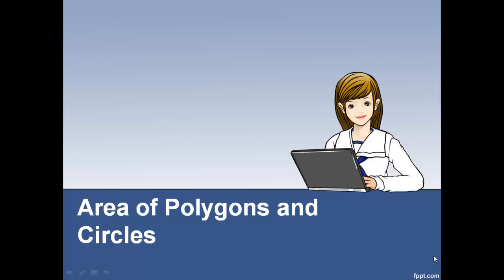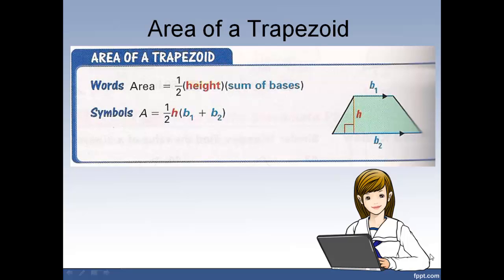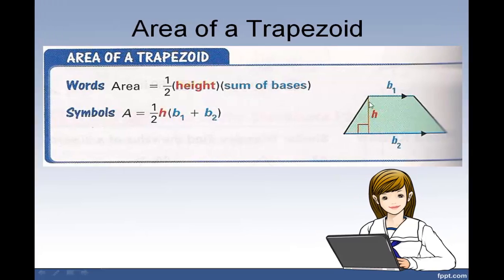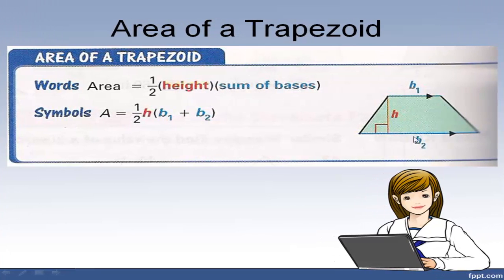In this video we're going to do area of trapezoids. Trapezoids are quadrilaterals. They have one pair of parallel sides. These parallel sides we call the bases, and these non-parallel sides we call the legs.